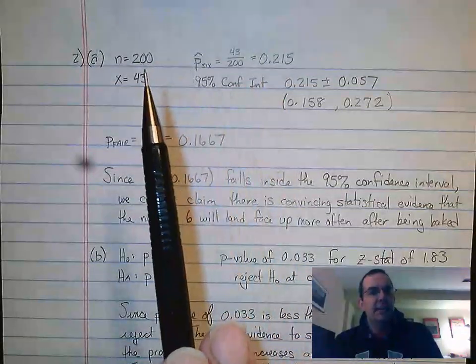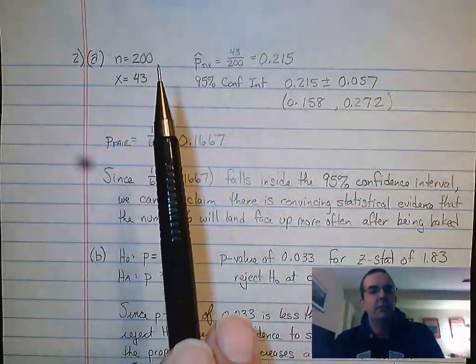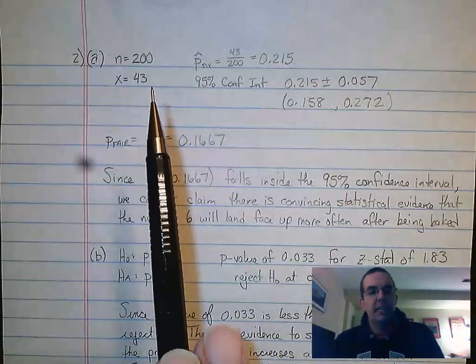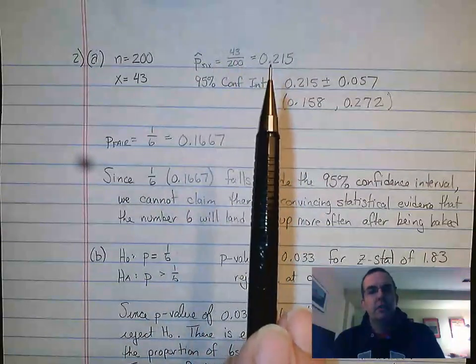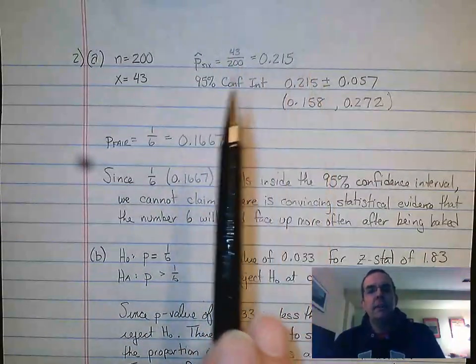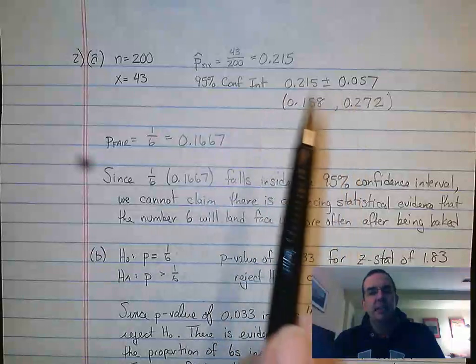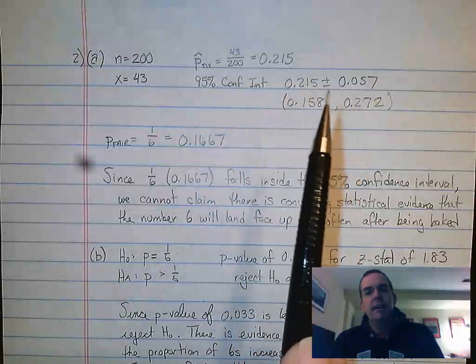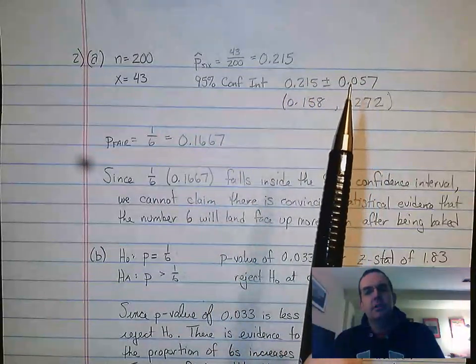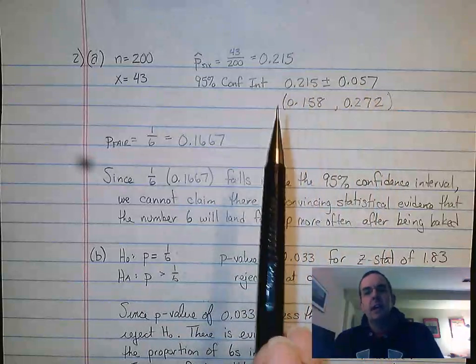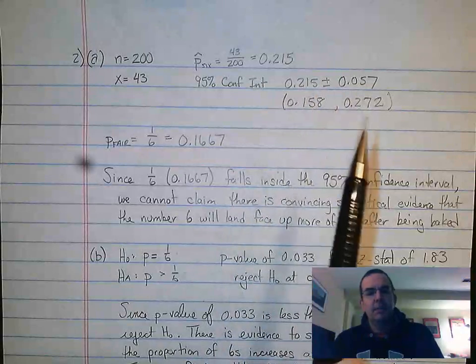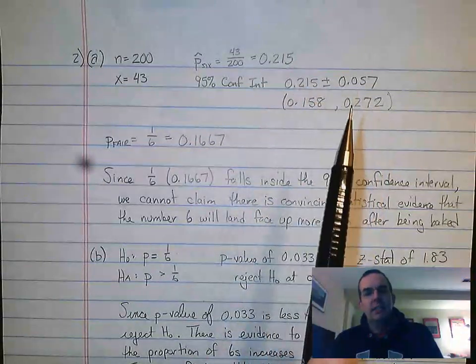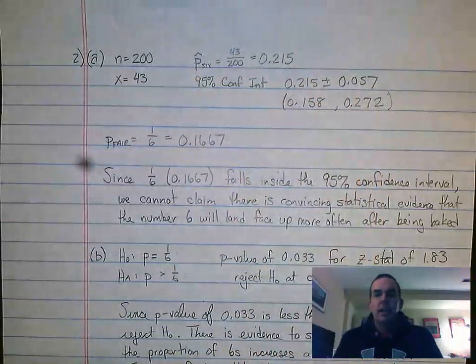They said that after they baked this die, they rolled it 200 times and 43 times the six came out on top, which is a proportion of 43 out of 200, 0.215. They gave you the 95% confidence interval, 0.215 plus or minus 0.057. I just turned that into the range, I subtracted the numbers to get 15.8%, I added the two numbers here to get 27.2%.